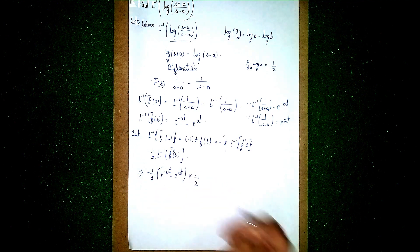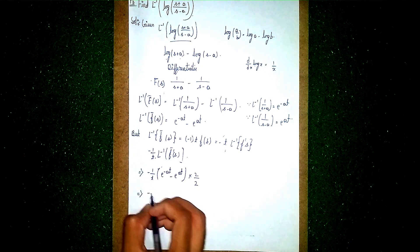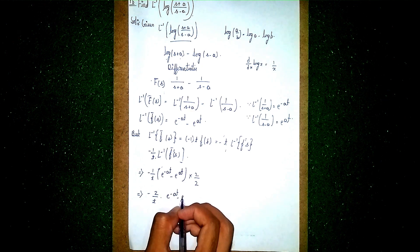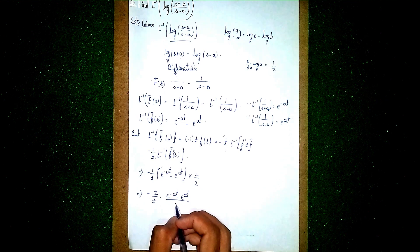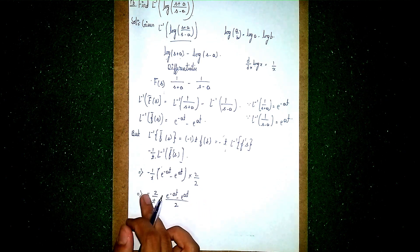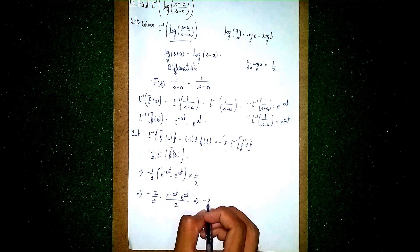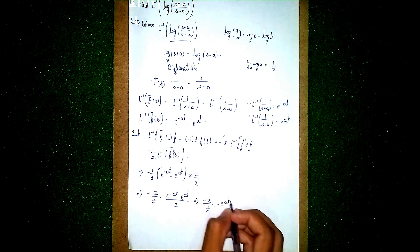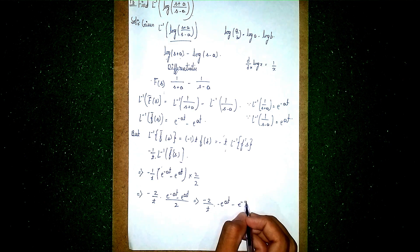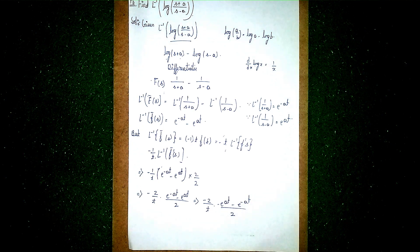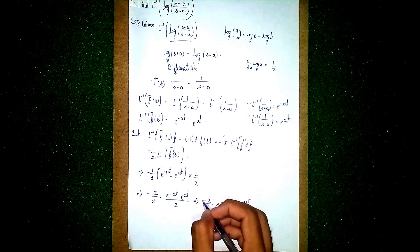Now multiplying and dividing by 2 to put it into a standard formula form, it becomes minus 2/t times (e^(−at) minus e^(at))/2. Rearranging: we take minus first, so it becomes minus 2/t times (e^(at) minus e^(−at))/2. The minus signs cancel.